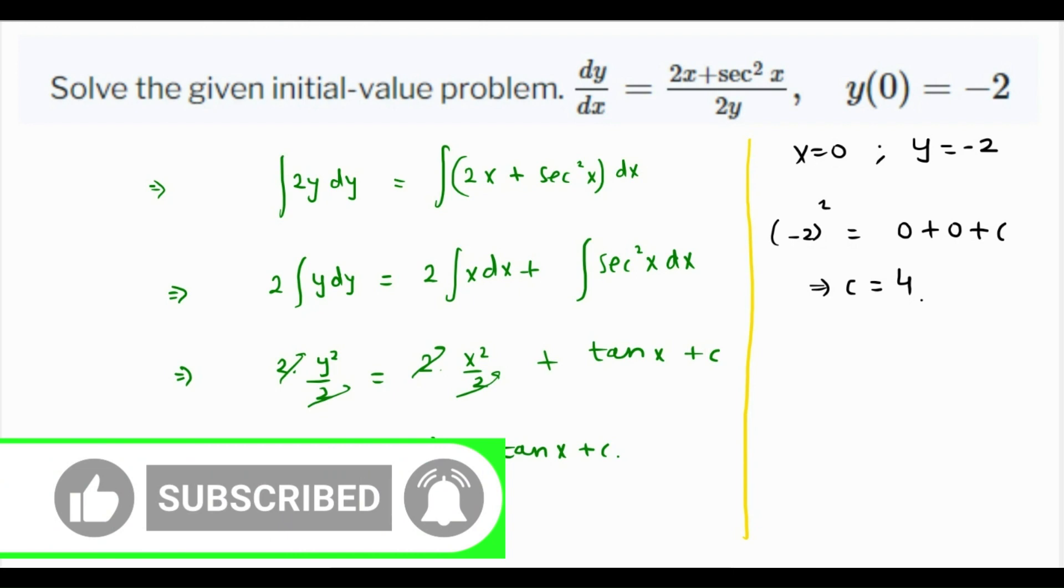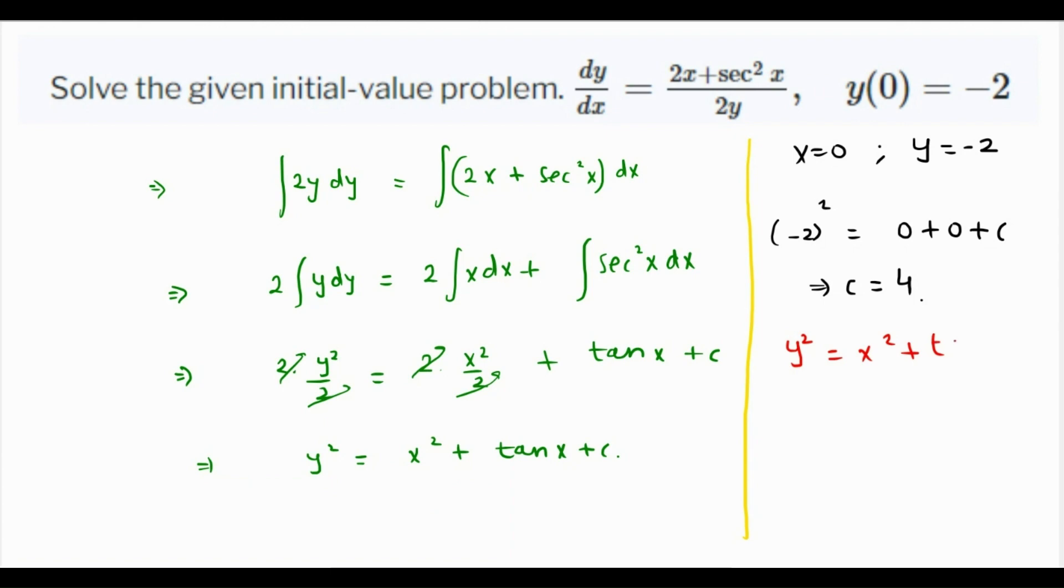So if c is 4, then the final answer is y square is equal to x square plus tan x plus 4. Thank you.